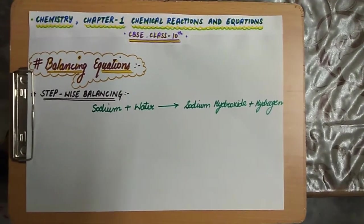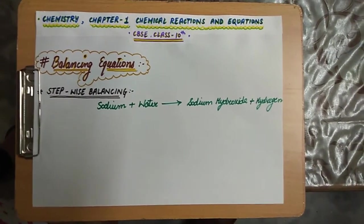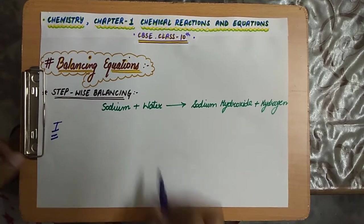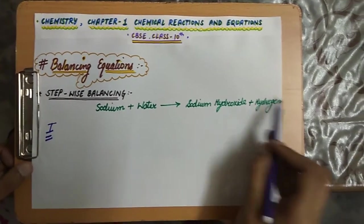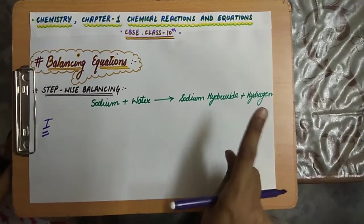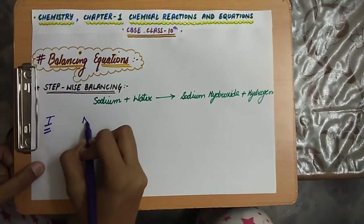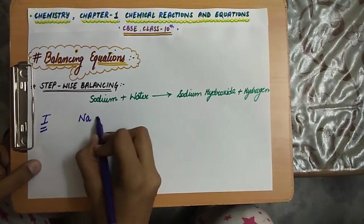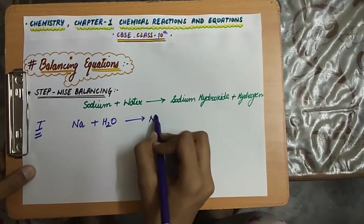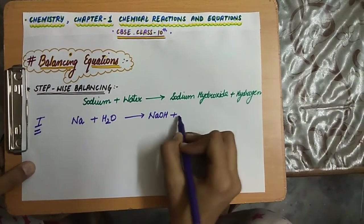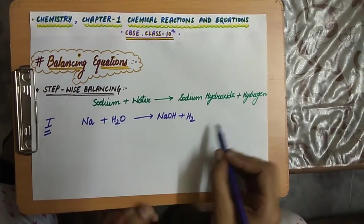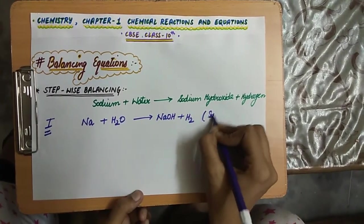What are the methods to balance this chemical equation? Step 1: firstly, we have been given the chemical equation in the form of a word equation. We have to convert this word equation into a symbol equation. The symbol of sodium is Na, water is H₂O, sodium hydroxide is NaOH, and hydrogen is H₂. So step 1 was converting the word equation into the symbol equation.